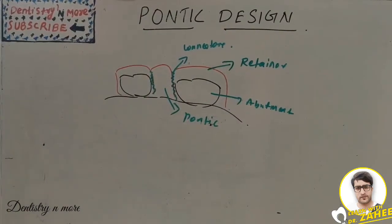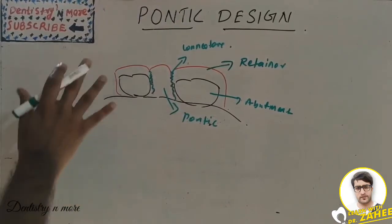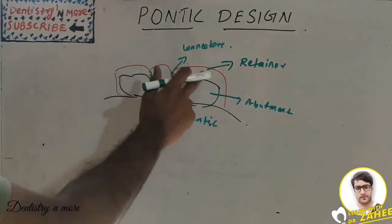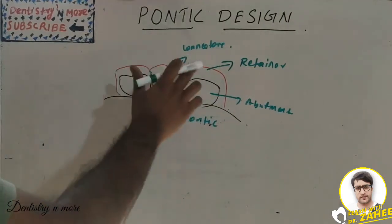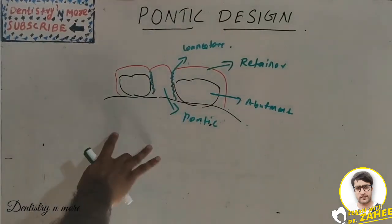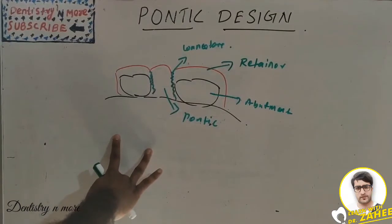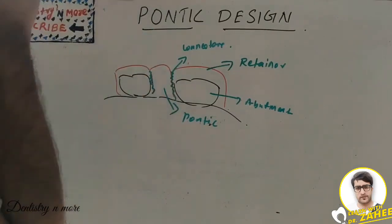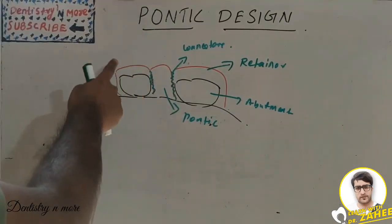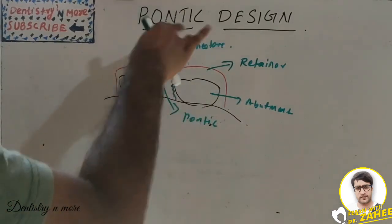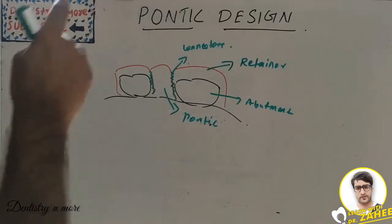This is a very commonly asked essay question. A fixed partial denture (FPD) is a classic restoration where one tooth is replaced with the help of two supporting teeth on either side. The basic components of an FPD include the pontic, which is the tooth to be replaced present in the edentulous area, and two artificial teeth that come as a joint unit along with the pontic — these are known as retainers.